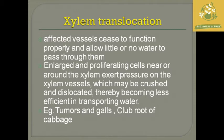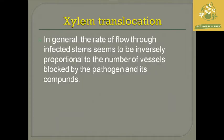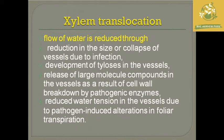Examples of such pressure-related damage include tumors and galls as well as club root of cabbage. This is a picture of clogging of xylem vessels by Ralstonia pathogen. In general for xylem translocation, the rate of flow through an infected stem is inversely proportional to the number of vessels blocked by pathogens and their compounds — as the number of blocked vessels increases, the rate of water flow gradually decreases.